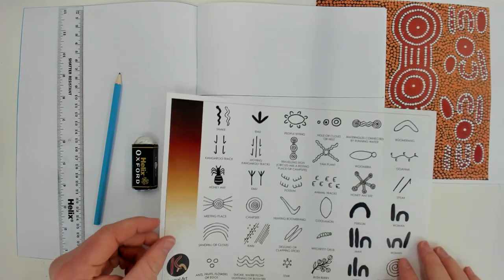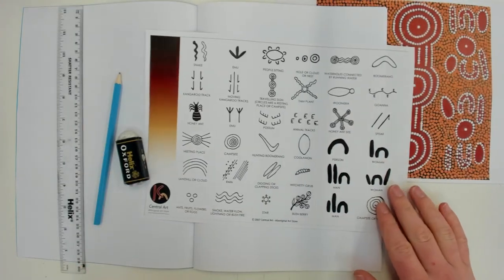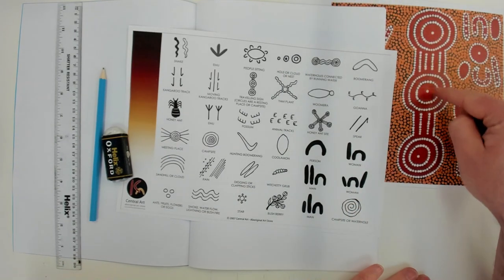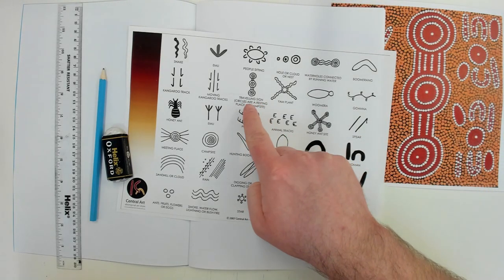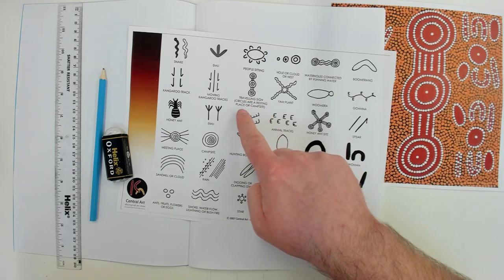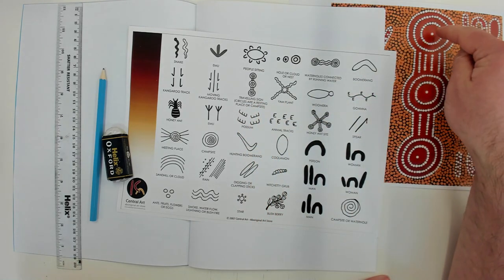So looking at the symbols that I've got in front of me, I can see here that on these three circles, the lines connecting them, I've got a travelling sign. So circles are a resting place or a campsite. So people have started from one campsite,